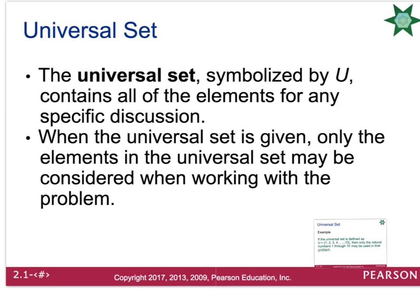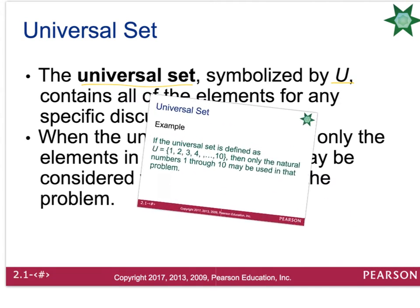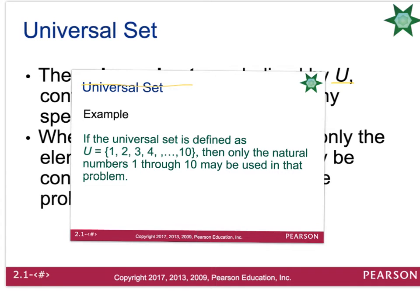The last topic of this section is called the universal set. The universal set is symbolized with a capital U and is a description of all of the elements for any specific discussion. When the universal set is given, only the elements in the universal set may be considered when working with the problem. For example, if the universal set is defined as the numbers 1 through 10, then only natural numbers from 1 through 10 could be used — if you wanted to use the number 22, you would not be allowed to because it is not in the universal set. This has been a brief introduction to set concepts — please email me if you have any questions.